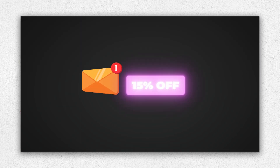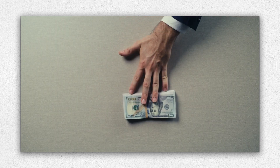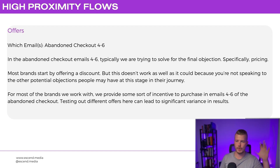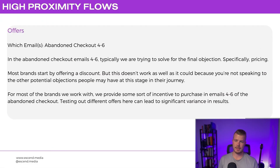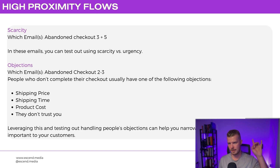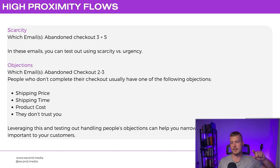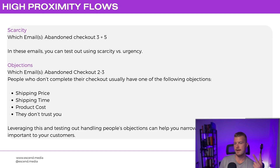In abandoned checkout emails four to six, test different offers to overcome the final objection of price. Don't start by offering a discount upfront like some brands do — escalating from 10% to 15% to 20% to 30% just destroys margin. Start by handling other objections first, then use the incentive in emails four and five and test different offers. Also test scarcity versus urgency in emails three and five, and test handling different objections — shipping, trust, product concerns — in emails two and three.